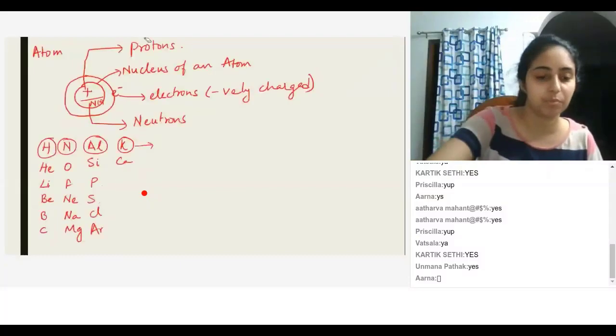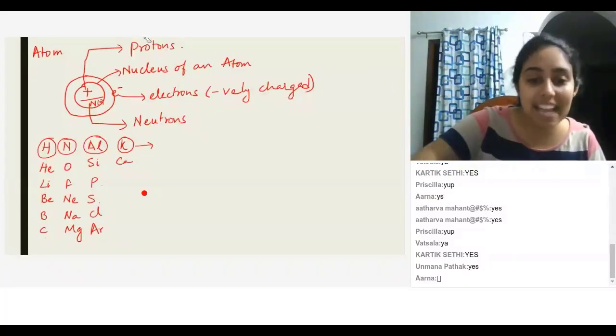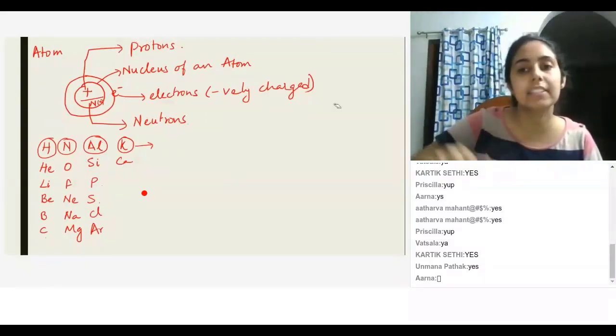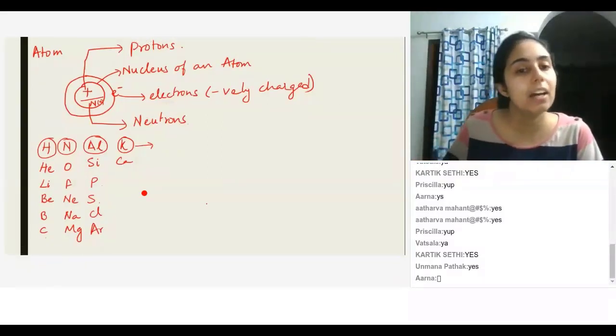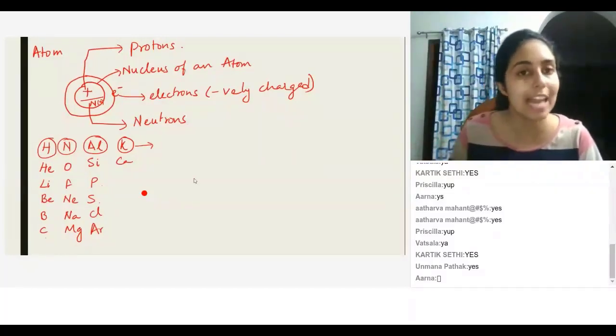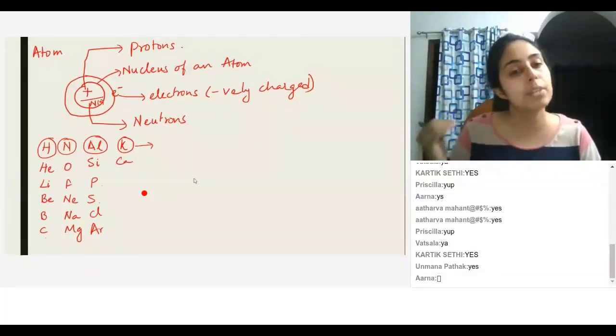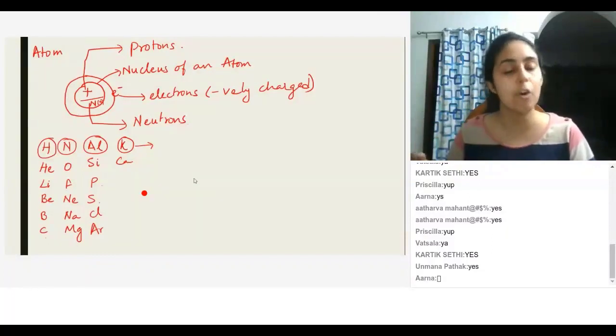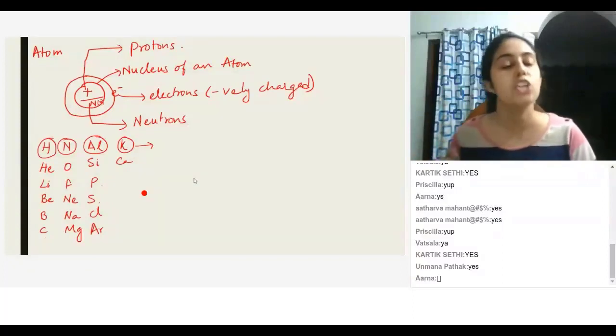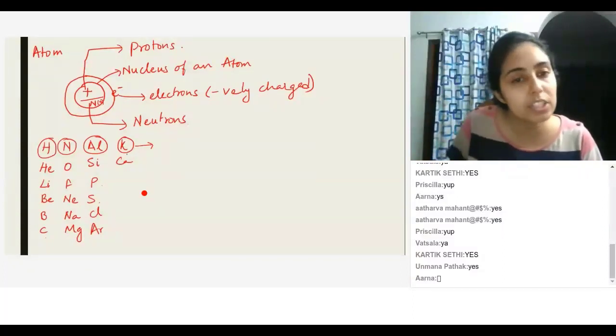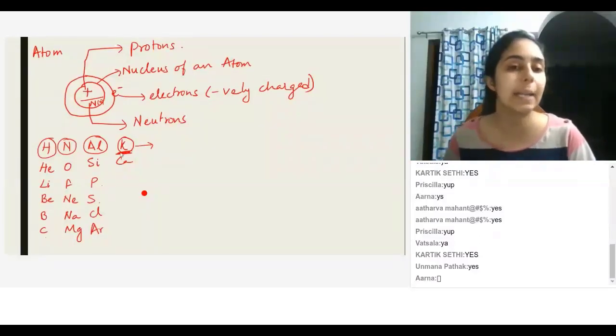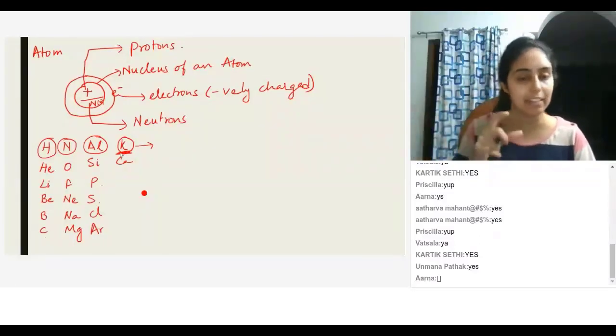Because the Latin name starts with K, exactly. So the thing is, most of these elements, when they were discovered, we were naming them using another language called Latin. All these names were first given in their Latin form, and then we started naming them in their English form. All these elements that you see which have unusual lettering, they all have a Latin name, and that is why you have that letter for it.